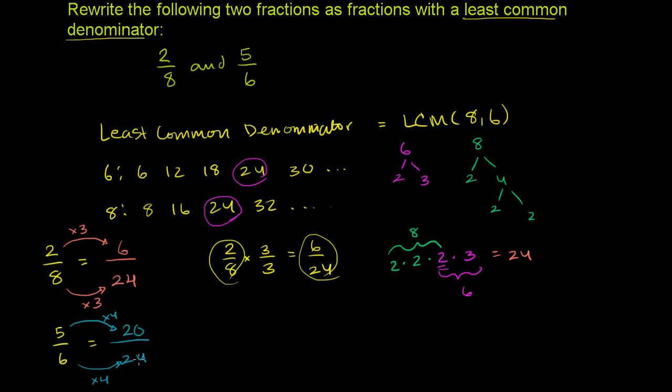So we're done. We've written 2 eighths as 6 twenty-fourths, and we've written 5 sixths as 20 twenty-fourths. If we wanted to add them now, we could literally just add 6 twenty-fourths to 20 twenty-fourths. And I'll leave you there, because they didn't ask us to actually do that.